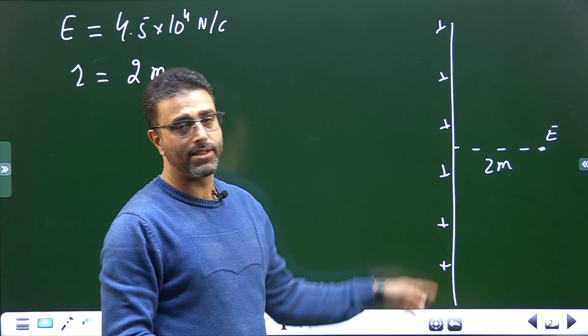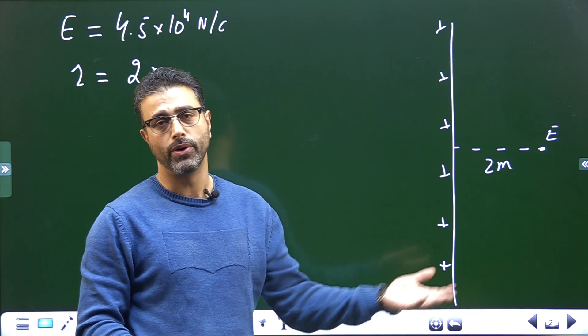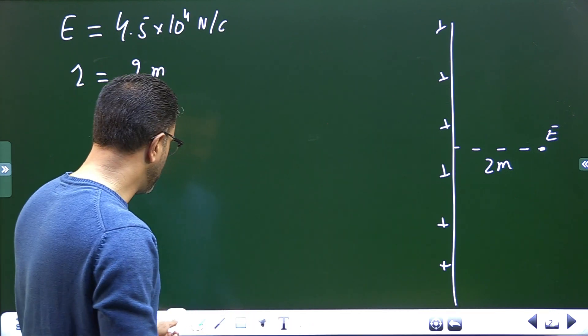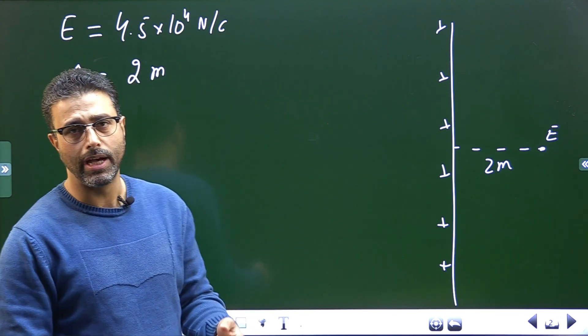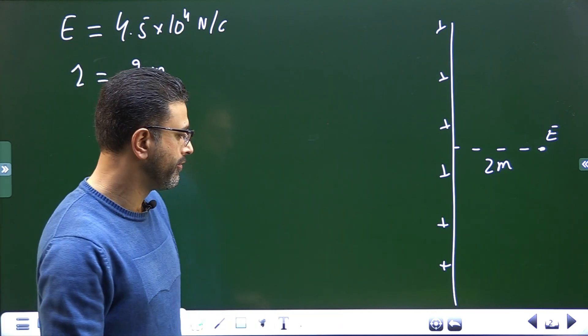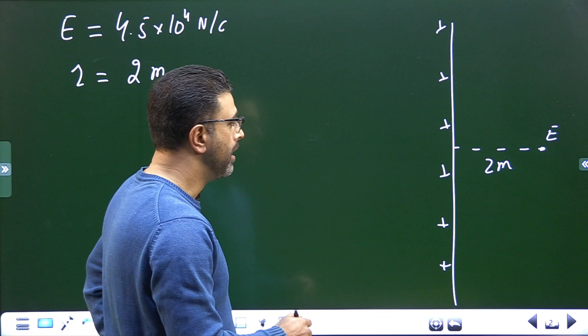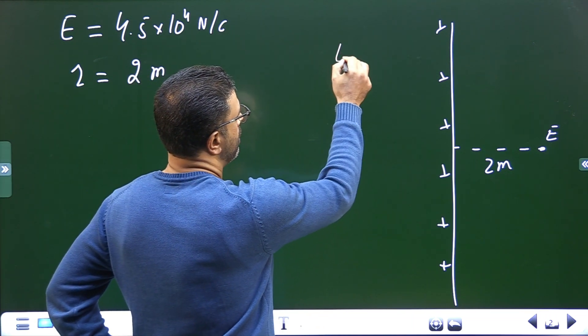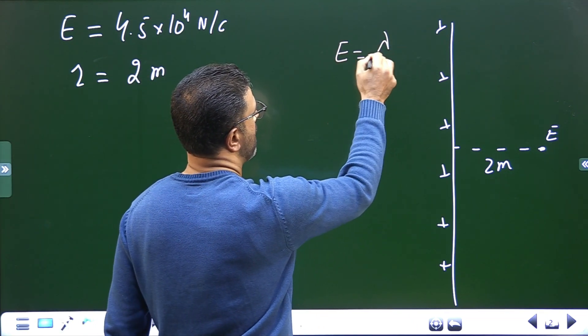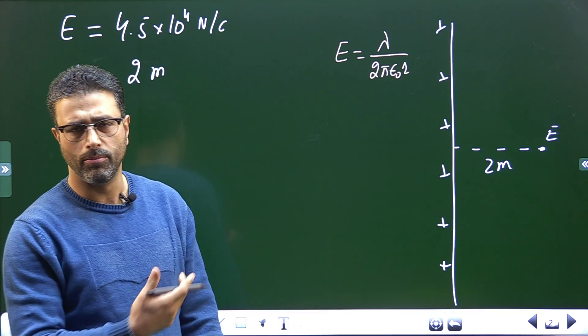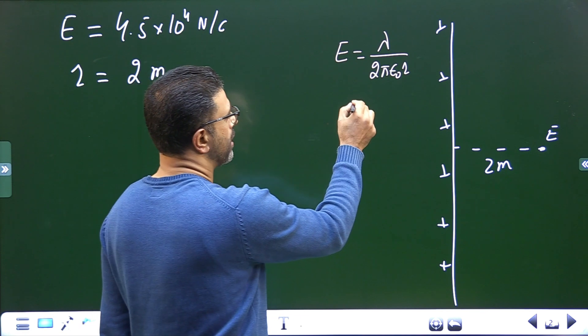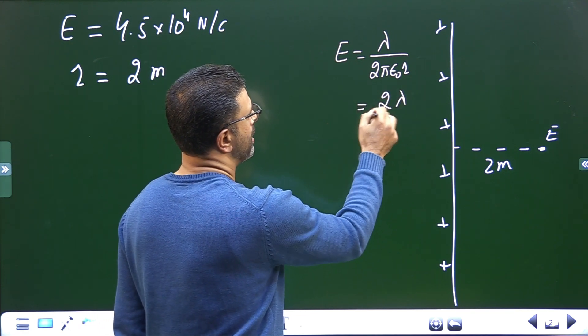So we have to find out charge per unit length. Now for a line charge, you must be aware we have done it in previous sessions, that the field due to a line charge is lambda divided by 2 pi epsilon 0 r, a very simple derivation from Gauss law, which can also be written as twice lambda divided by 4 pi epsilon 0 r.